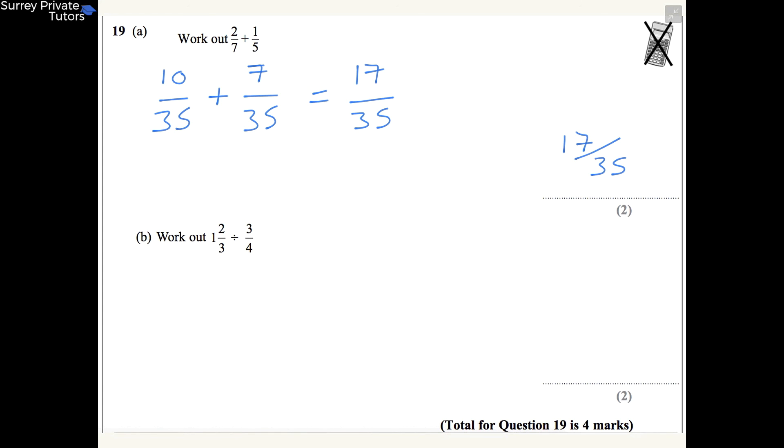Part B, now we're doing a division. You can see we've got a mixed number there, so the first thing we need to do is convert that into an improper fraction. We've got one whole, which is the same as 3/3, so if we add that to the 2/3, we've got 5/3 in total. And we're dividing by 3/4. Now we need to flip this second fraction, 3/4, and change the division sign to a multiplication sign, so we get 5/3 times by 4/3.